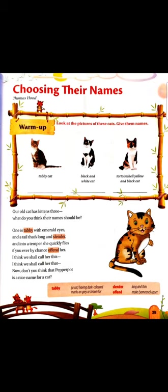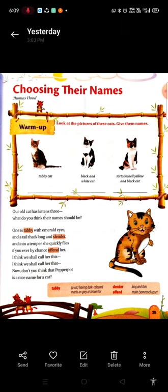Hello dear students. Today we are going to start our poem of lesson number 2. We have already completed the explanation of prose of lesson number 2, 'My Early Home', and today we are going to listen to the explanation of the poem of lesson number 2, 'Choosing Their Names', which is written by Thomas Hood.